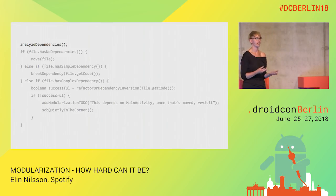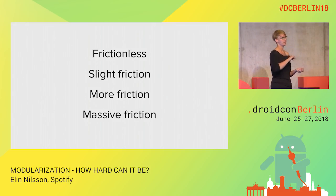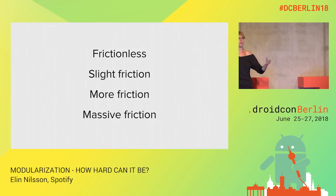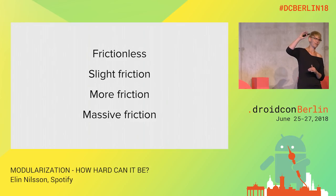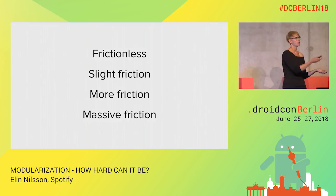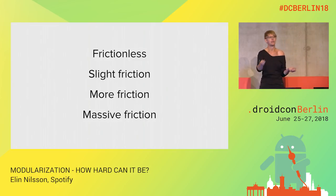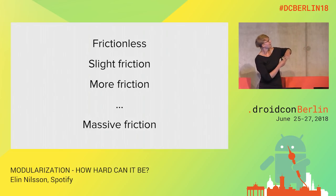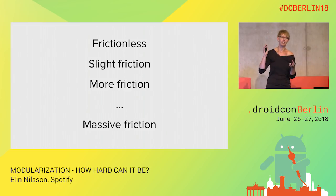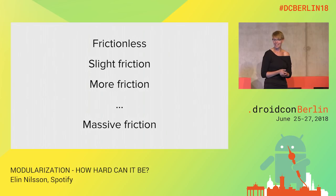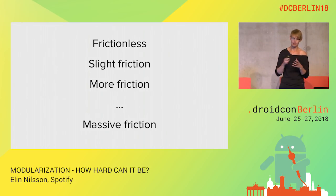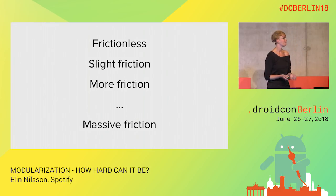We talk about this process through pseudocode. The first step is to analyze the dependencies of anything you want to move. We have a scale from frictionless to massive friction. Frictionless means the class has no dependencies — you just move it and it still works. Then there's a scale of slight to more friction where a class depends on a frictionless class, or depends on a class that depends on another, and so on. Massive friction is the main source of spaghetti code — for us, that's things like MainActivity, which basically knows about everything in the entire app.